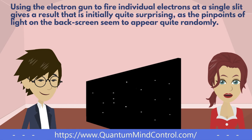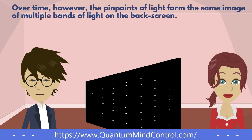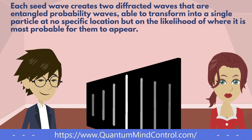Using the electron gun to fire individual electrons at a single slit gives a result that is initially quite surprising, as the pinpoints of light on the back screen seem to appear quite randomly. Over time, however, the pinpoints of light form the same image of multiple bands of light on the back screen. Each seed wave creates two diffracted waves that are entangled probability waves able to transform into a single particle at no specific location, but based on the likelihood of where it is most probable for them to appear.